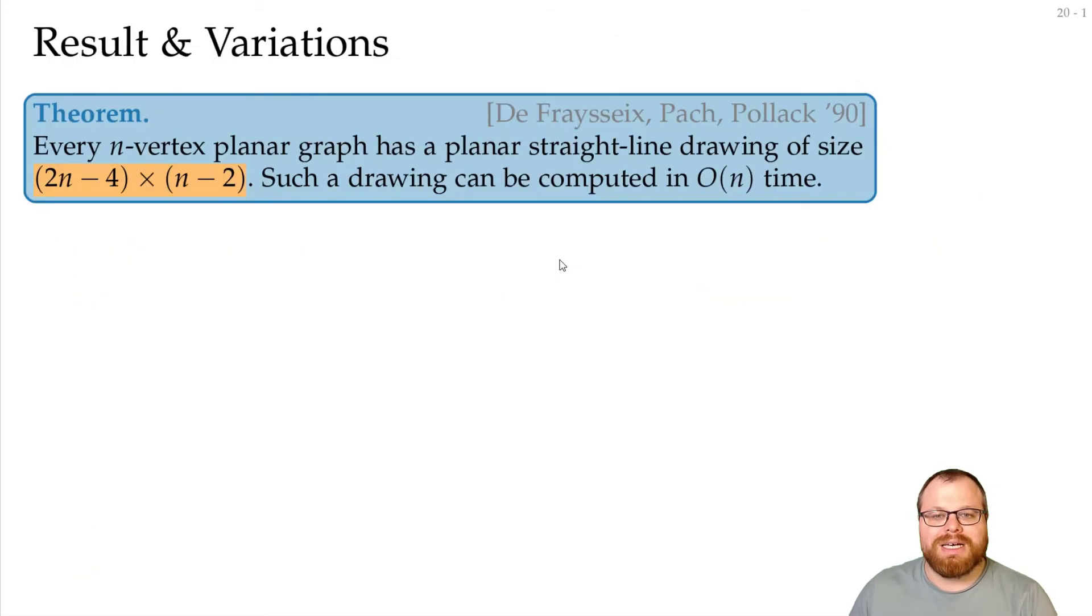And our main result: that every n-vertex planar graph has a straight-line drawing of size (2n-4) × (n-2), and we can compute it in linear time.